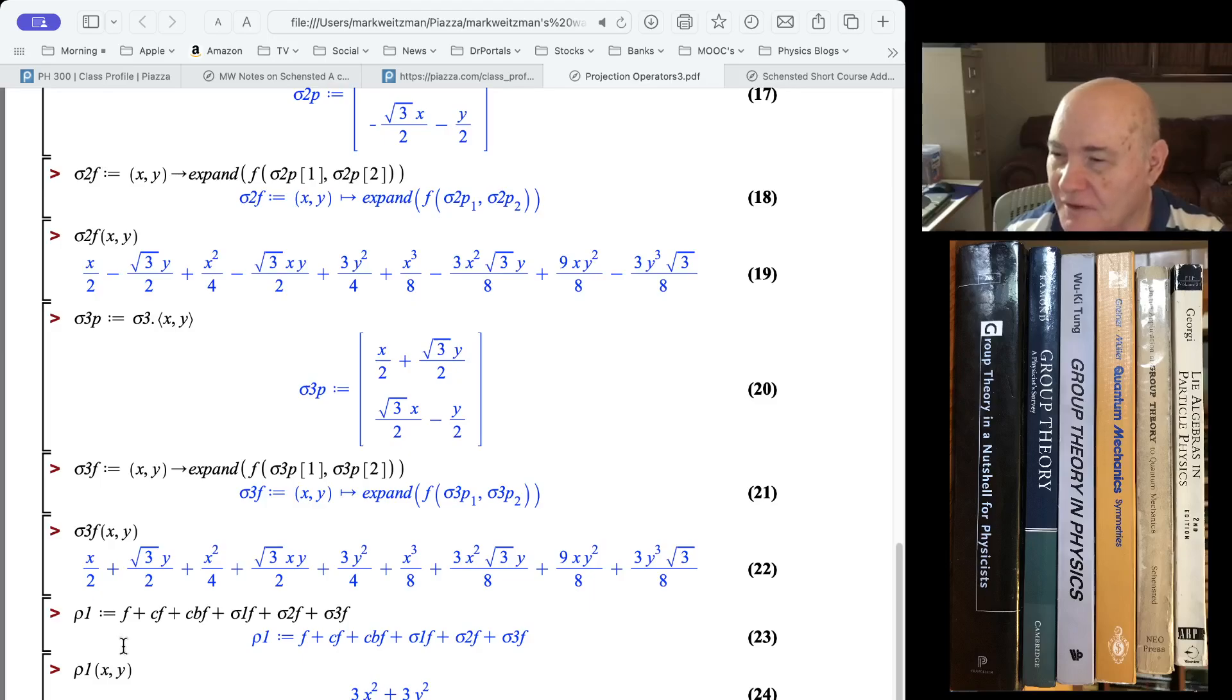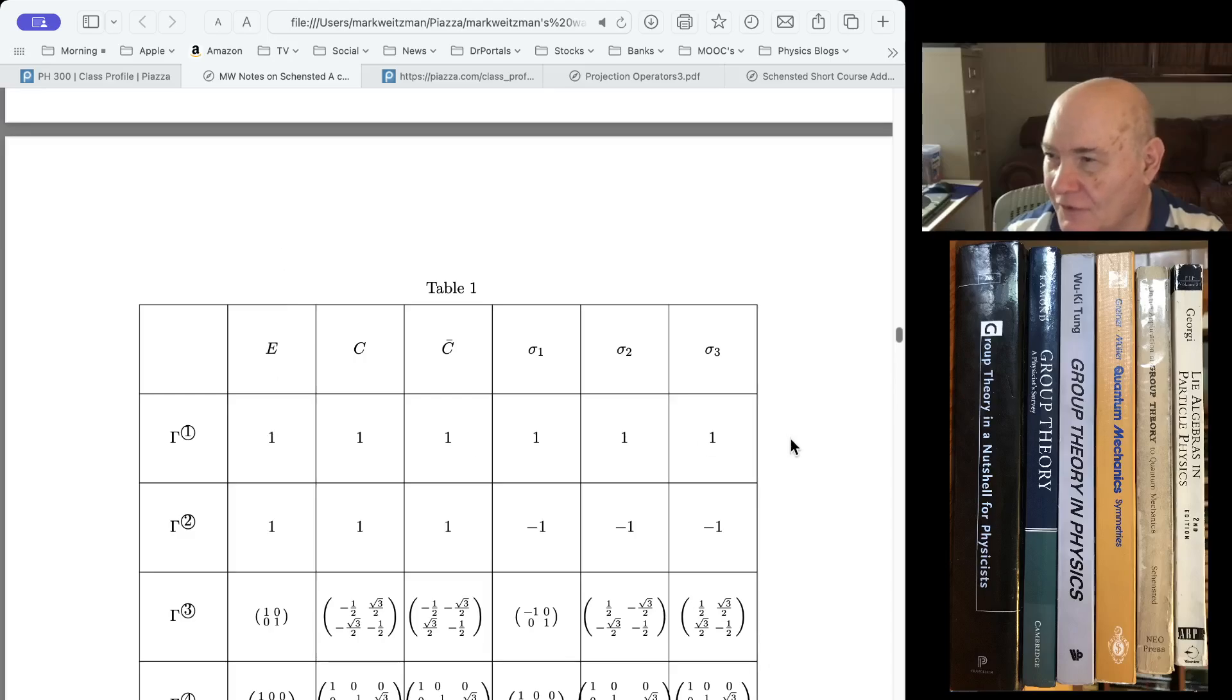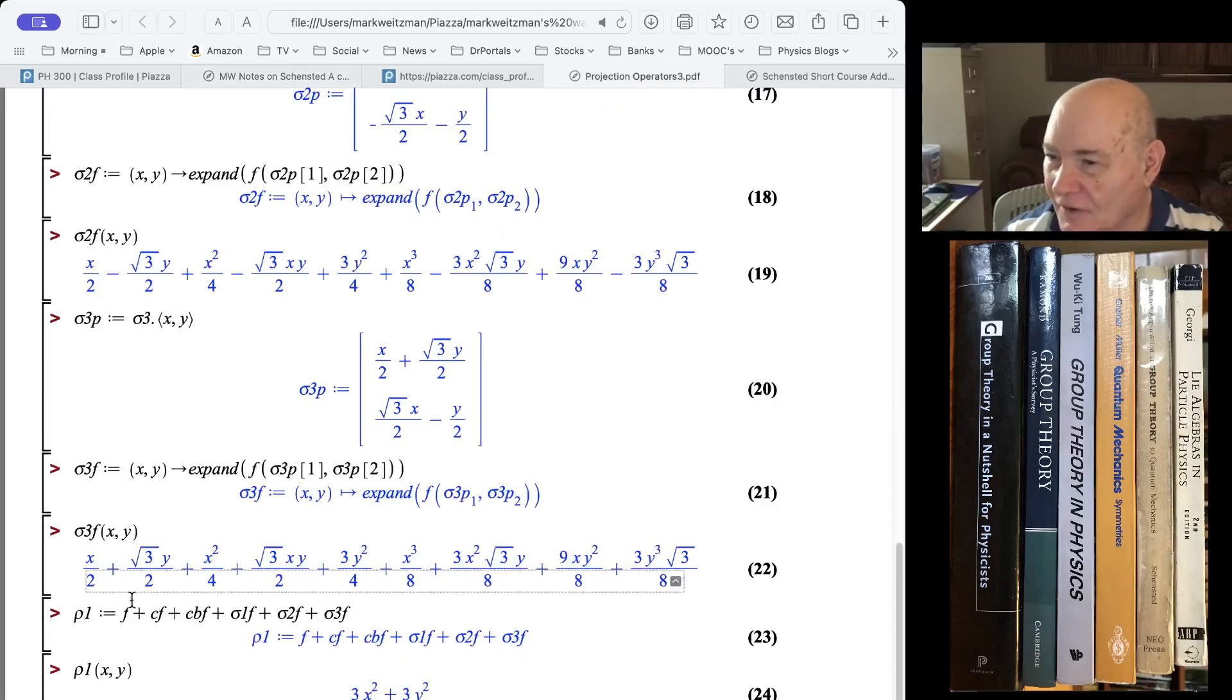Then I do the reflection ones. The reflection ones, they're their own inverse, so you don't have to worry about screwing up that. So this is the simple reflection around the Y axis. As I said, it's very simple.